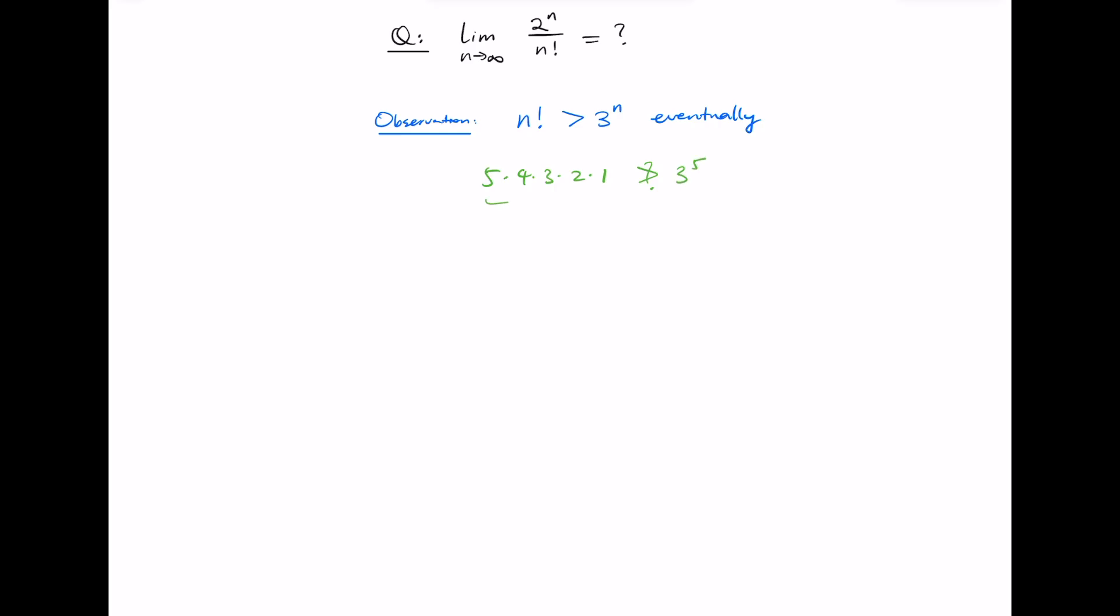Now in this case, 5 factorial is 120, whereas 3 to the power of 5 is 243, so this is not true.